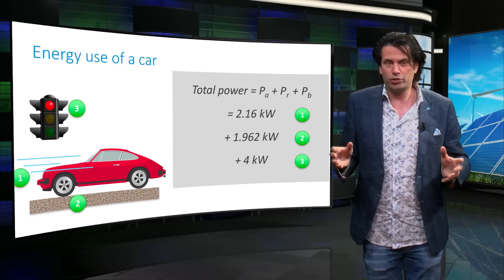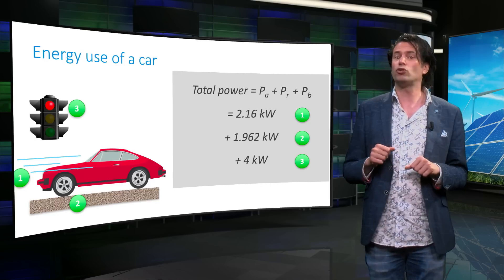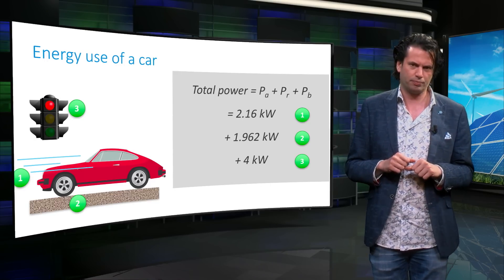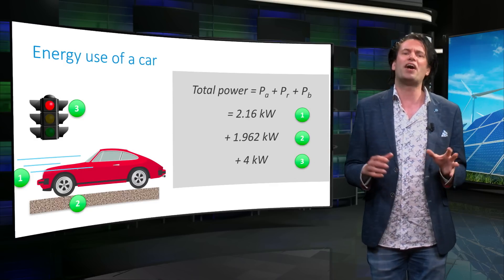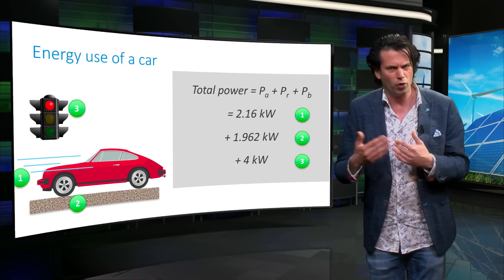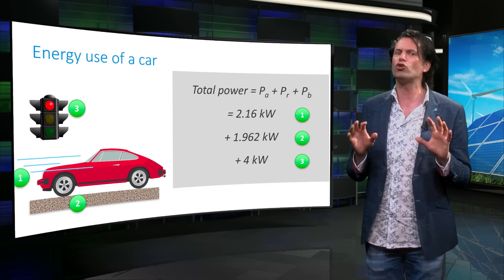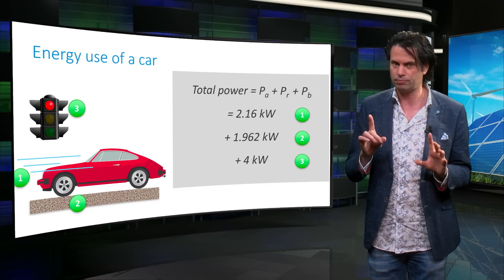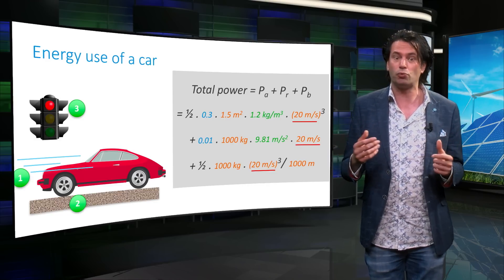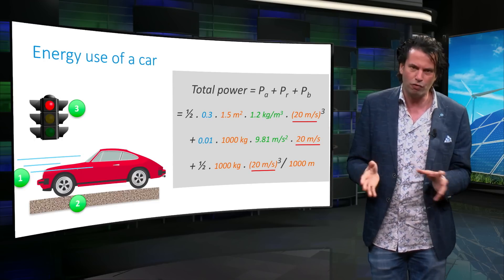Using these values we get 2.16 kW of air resistance, 1.9 kW of rolling resistance and 4 kW of braking resistance. You can see that the power required to overcome braking resistance is larger than the other two, while the rolling resistance is the lowest. This is largely because of the speed at which the car is moving. At higher speeds the air resistance and braking resistance, which are proportional to the third power of the speed, dominate over the rolling resistance.